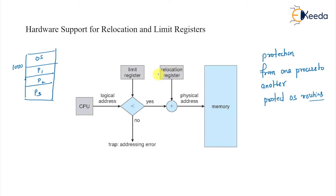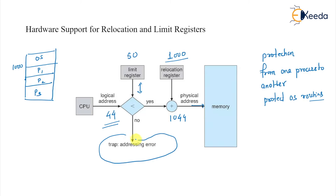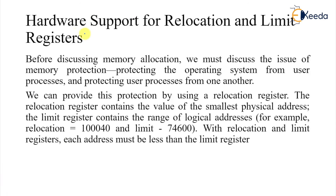That protection is achieved by using the limit register and the relocation register. Suppose the limit register is 50 and the relocation register is 1000. Then it checks whether the logical address is within the limit. If the logical address, say 44, is less than the limit, it will be relocated to 1044, and you can access the memory. Otherwise, a trap is generated.